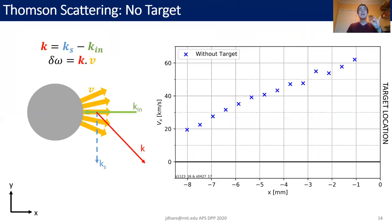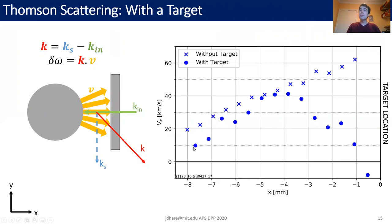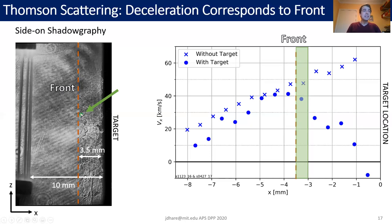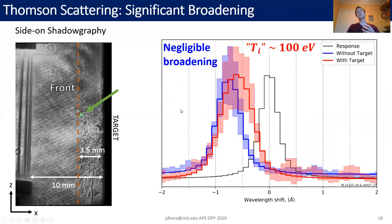When we do this Thomson scattering measurement in a plasma where there is a target, we can see that at first the flow is very similar — also accelerating outwards — but around minus three to minus four millimeters we see a change: the flow suddenly begins to decelerate, and very close to the target we see the flow coming back the other way, having changed direction. At the same time, in this experiment we captured side-on shadowgraphy, and you can see that the turbulent region on the right starts around 3.5 millimeters away from the target — exactly the location where we start to see the velocities drop down.